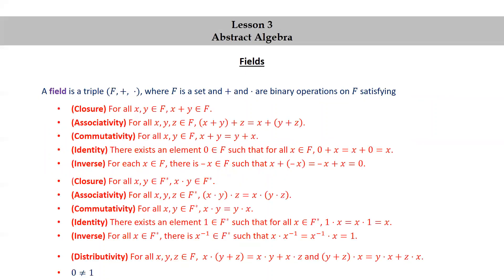Here we have all of the properties listed simultaneously. These statements together are known as the field axioms. Remember, an axiom is something that we're assuming to be true. So the field axioms are all the statements that we assume to be true whenever we're talking about a field.